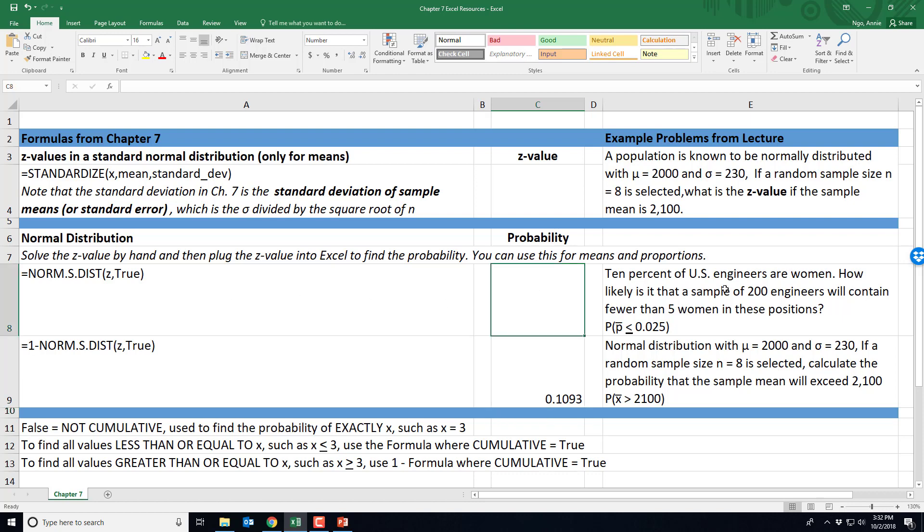In this other example here, 10% of US engineers are women. How likely is it that a sample of 200 engineers will contain fewer than five women in these positions? We've stated that we're interested in the probability that our sample proportion is less than or equal to 0.025.